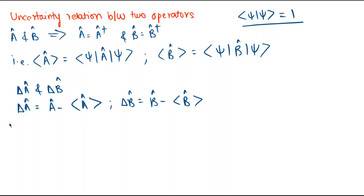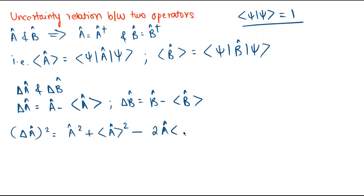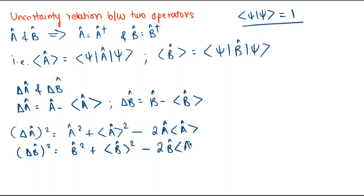By taking the square of delta-A-cap and delta-B-cap we get: delta-A-cap squared equals A-cap squared plus expectation value of A-cap squared minus 2 times A-cap times expectation value of A-cap, and similarly for delta-B-cap squared equals B-cap squared plus expectation value of B-cap squared minus 2 times B-cap times expectation value of B-cap.